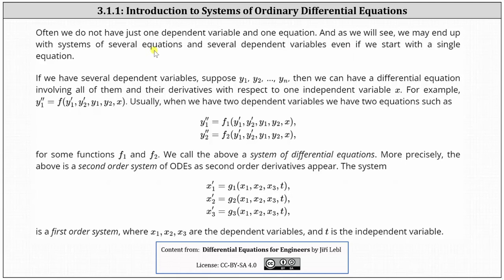If we have several dependent variables, suppose y1, y2, all the way through yn, then we can have a differential equation involving all of them and their derivatives with respect to one independent variable x. For example, y1 double prime equals f of y1 prime, y2 prime, y1, y2, x. This indicates y1 double prime is expressed as a function of the variables y1, y2, and their first derivatives, as well as the independent variable x.